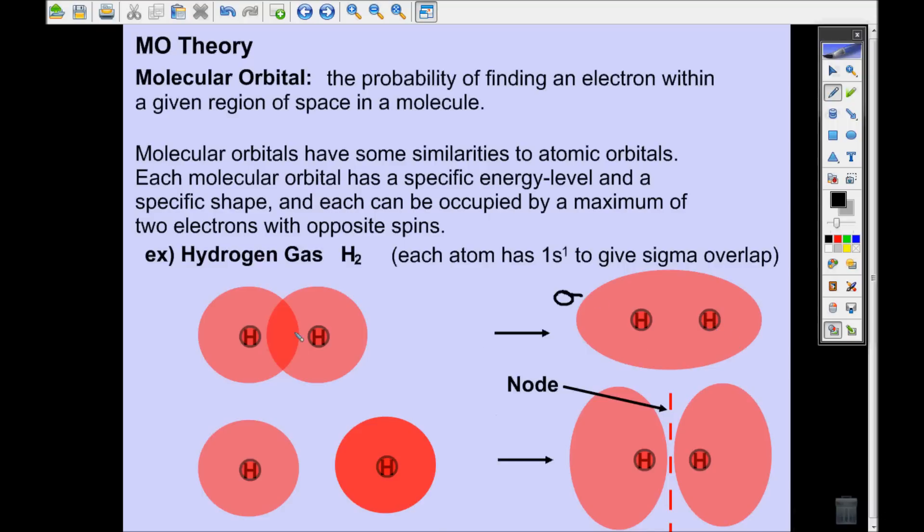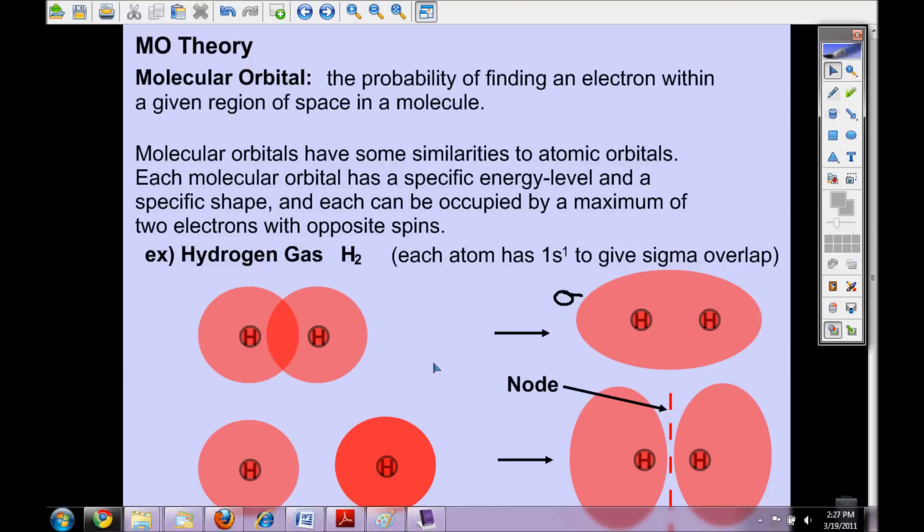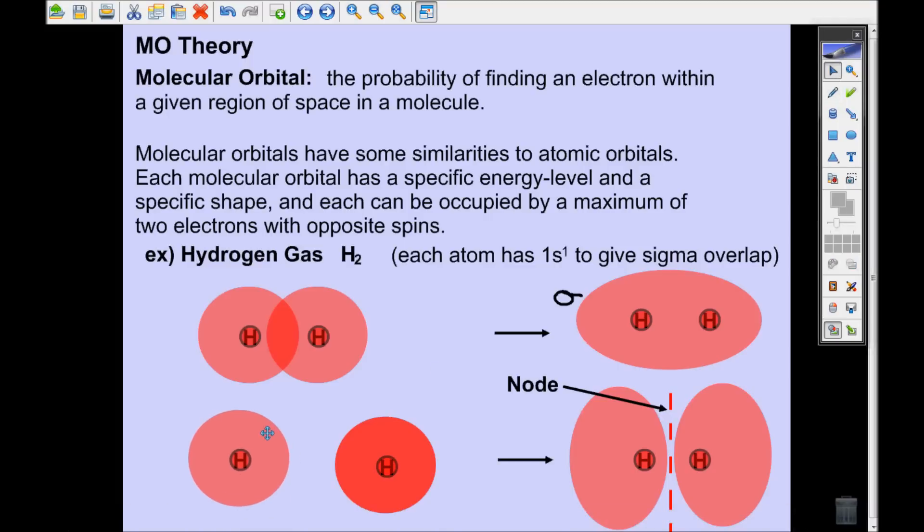Now, what also can happen is if two hydrogen atoms get close enough together, they can be subtracted. They can add in a negative way, in which one is subtracted from the other. You can think of them as this hydrogen atom right here being positive and this hydrogen atom being negative. That's not an electrical charge, that's just used to explain when you put them together, they're going to cancel each other out.